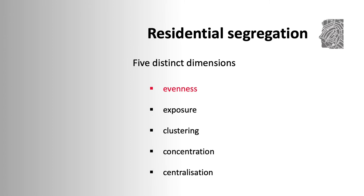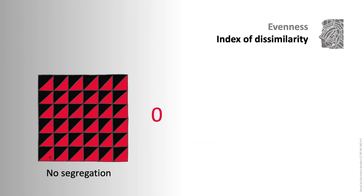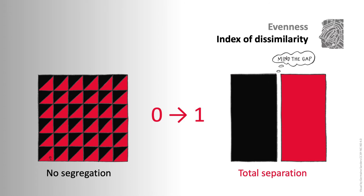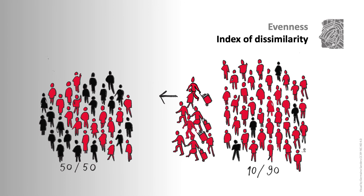So how do we measure evenness? The most commonly used index is the index of dissimilarity. In theory it can range from 0 to 1, although you'll sometimes see it reported as a percentage ranging from 0 to 100. A value of 0 means there is no segregation at all, with each neighbourhood having exactly the same composition of the two groups as the overall city — a value very unlikely to occur. Equally unlikely is a value of 1, which would mean complete and total separation between the two groups. When you calculate the index of dissimilarity, you obtain a value above 0, which refers to the proportion of the minority group population who would have to move neighbourhood to achieve an equal distribution across all neighbourhoods in the city. The higher the number, the more people who would have to move, and the higher the level of segregation.